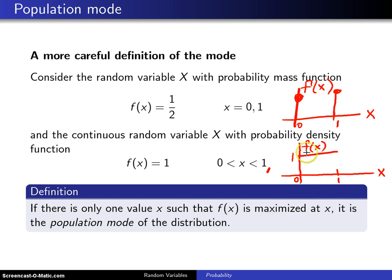Down here you can see we have an infinite number of values where f of x is maximized. Since it is not maximized at one value, the population mode does not exist in this case either.